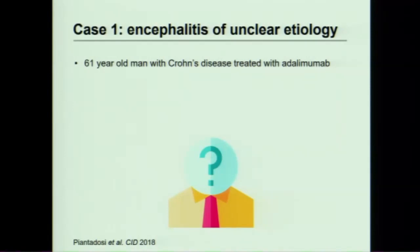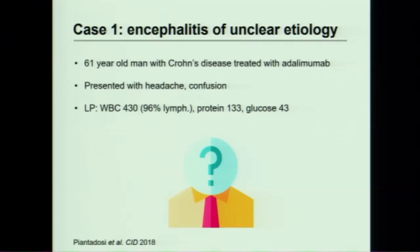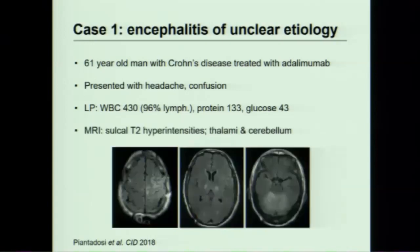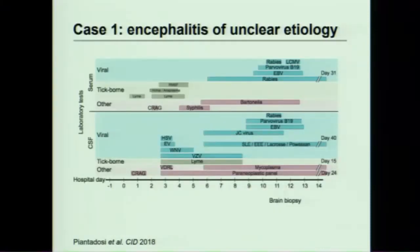He was a 61-year-old man with Crohn's disease treated with adalimumab — so a bit immunosuppressed — who came in with headache and confusion. He had a lymphocyte-predominant pleocytosis, elevated protein, and slightly low glucose. His MRI was notable for marked sulcal T2 hyperintensities as well as hyperintensities in the thalami and cerebellum. At this point, this syndrome could have been due to any number of things.